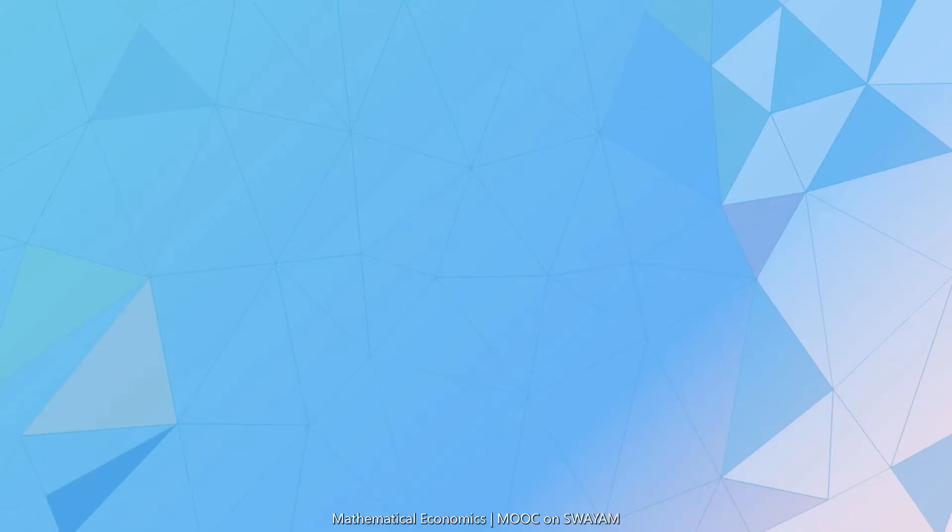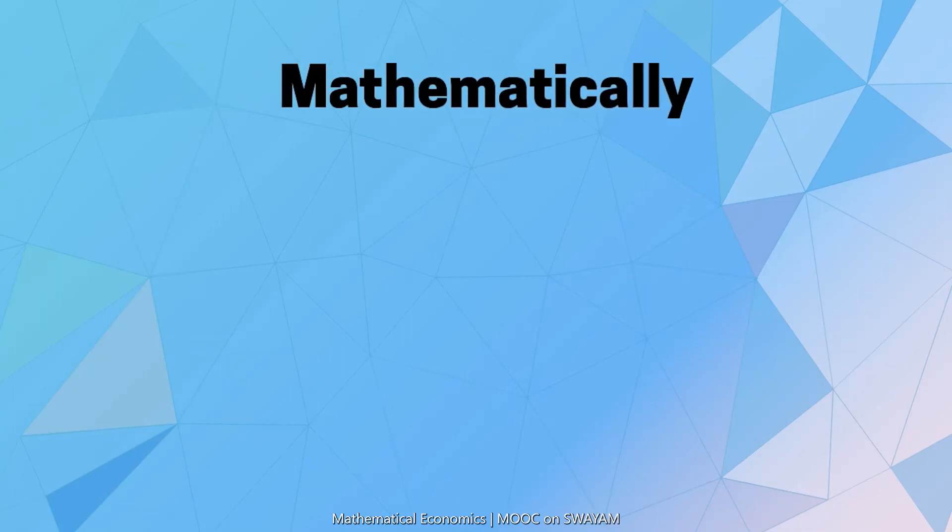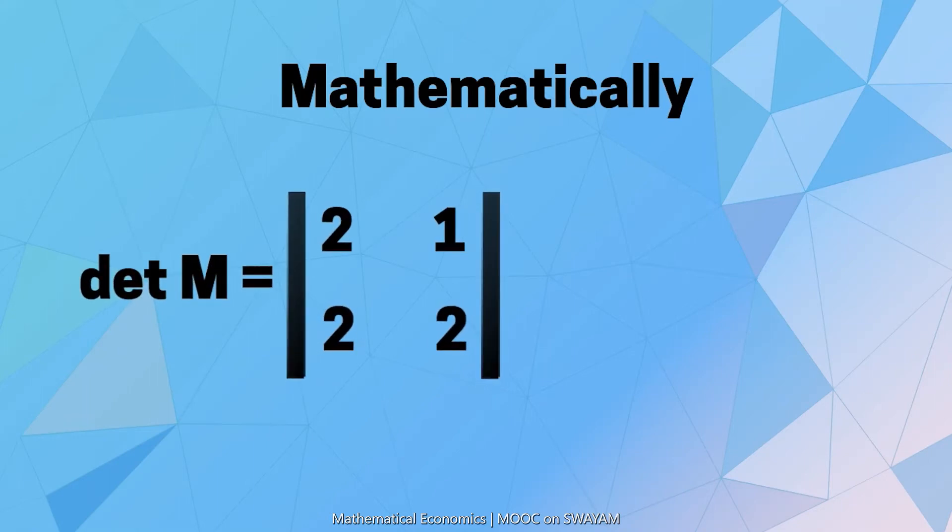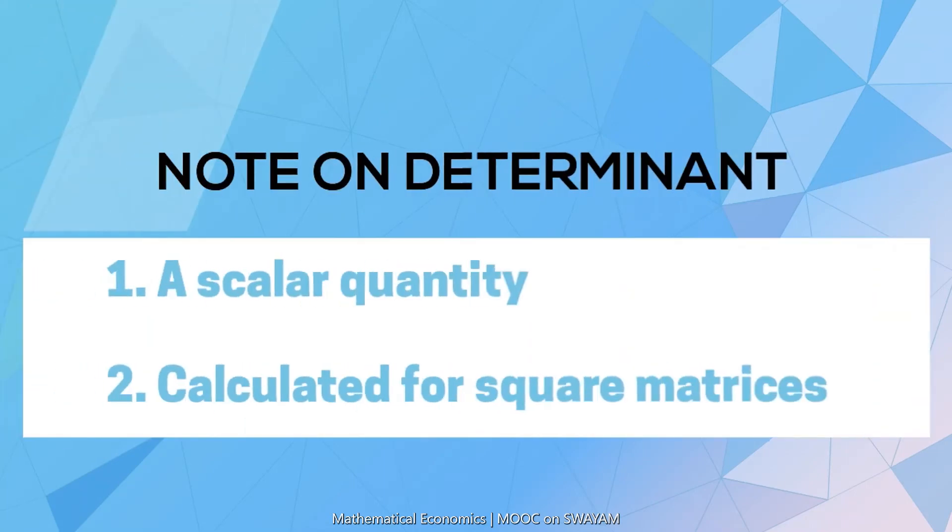Now mathematically, the determinant is calculated by the method of cross multiplication and gives us 2 into 2 minus 2 into 1, that is equal to 2. It must be noted that determinant is a scalar quantity and determinants can be calculated only for square matrices.